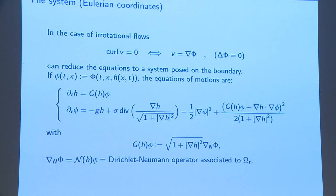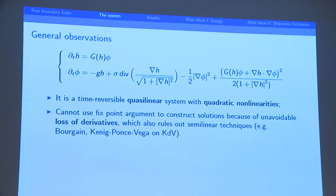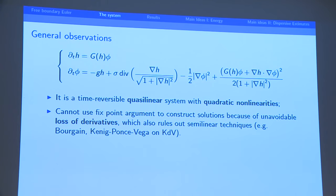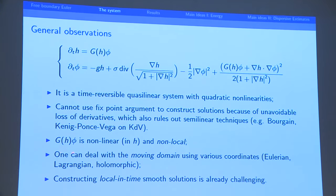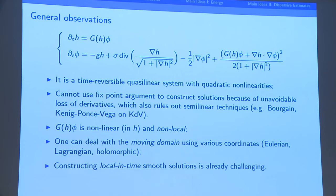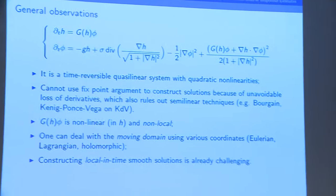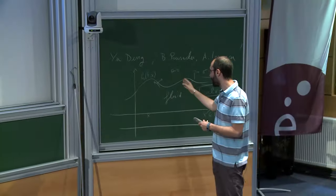This is Euler's equation, which once you express it for the potential becomes essentially Bernoulli's law restricted to the surface. So these are the equations, posed just on the boundary, where x is just R or R^2. This is a system of two equations for the evolution of the interface and the potential. You can deal with the issue of the moving domain in different ways — using Lagrangian coordinates, Morph coordinates — but these difficulties will still remain.